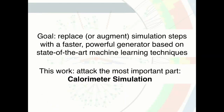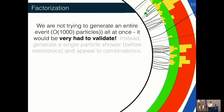If we can speed it up, that would make a big impact on the whole field. Our goal is to replace or at least augment simulation steps with a faster, powerful generator based on state-of-the-art machine learning — for instance, a GAN. We're going to attack the slowest part: the calorimeter. There are generically two kinds of detectors — you can either bend particles in a magnetic field and measure the trajectory, or you can try to stop them and measure how much energy you get. Stopping the particle is very simulation-intensive because you have to propagate the energy all the way from high energy down to ionization.